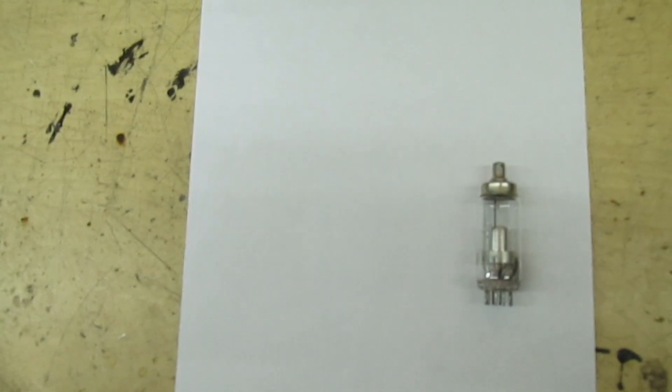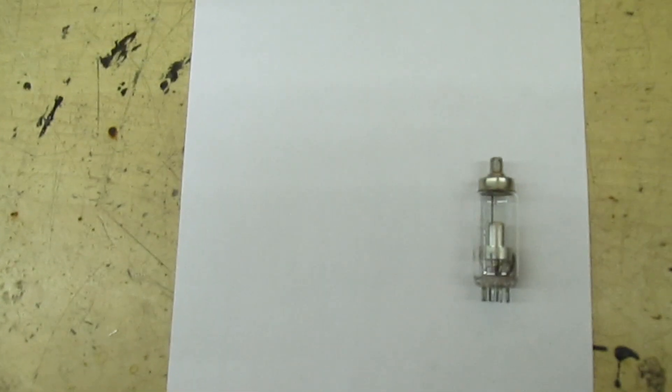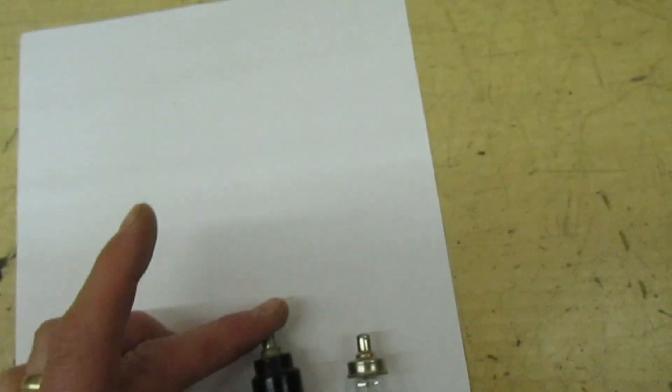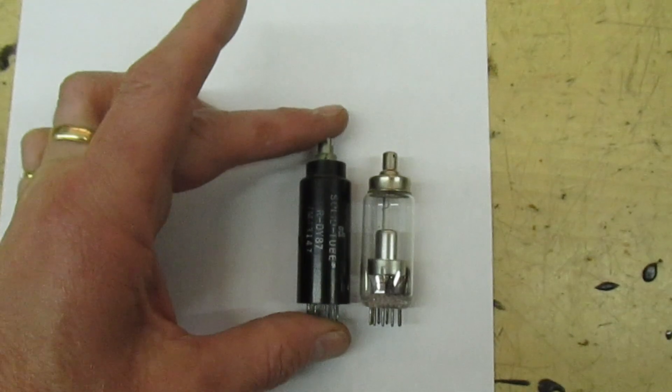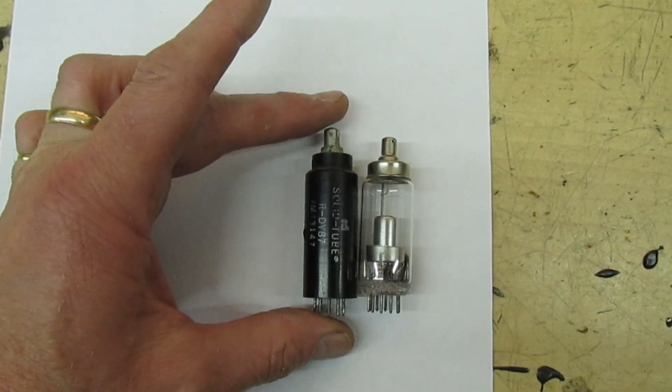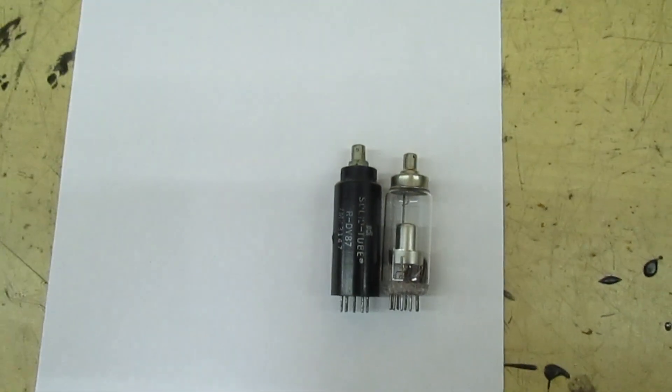It's a DY87 EHT rectifier thermionic valve. Now there's also a replacement for that which I've shown you on YouTube before. That's a silicon one, that's the silicon version of the DY87. But look at this I've come across.